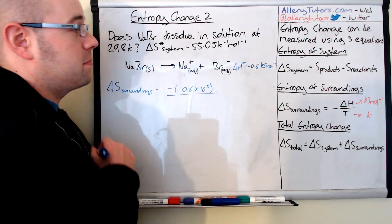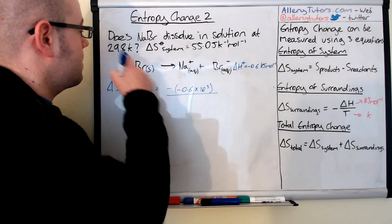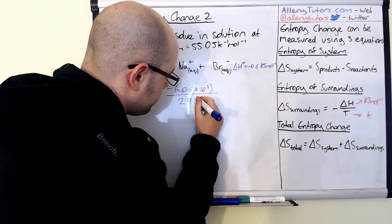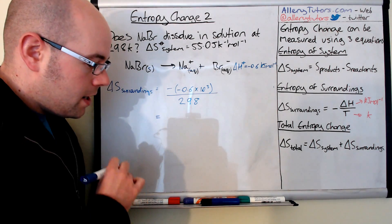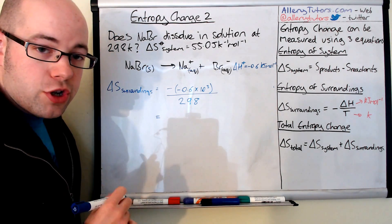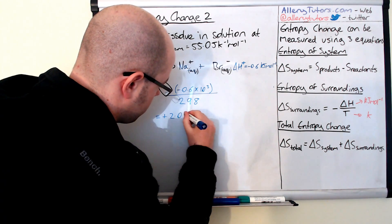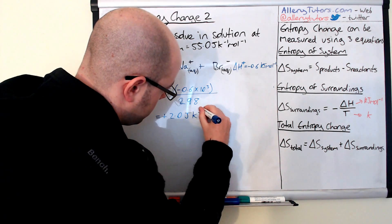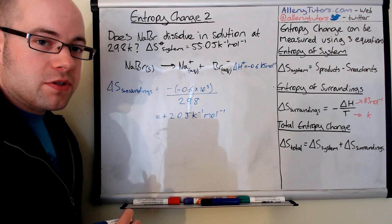Then we're going to divide this by the temperature. Now the temperature of this is room temperature, so it's 298 Kelvin. And if we put that into our calculator, we should come out with an answer of 2 joules per Kelvin per mole. So that's plus 2.0 joules per Kelvin per mole. That tells us the entropy of the surroundings.